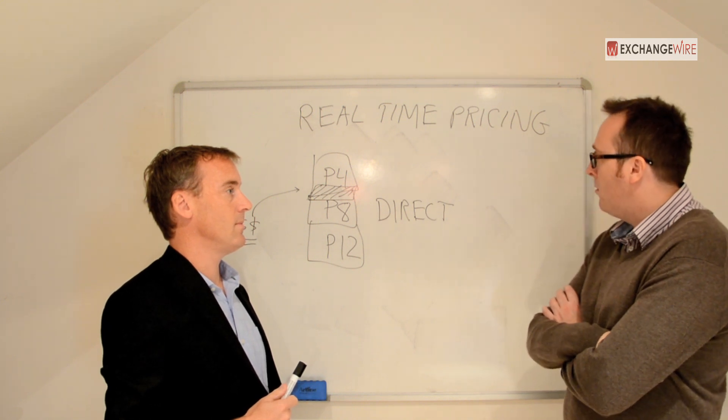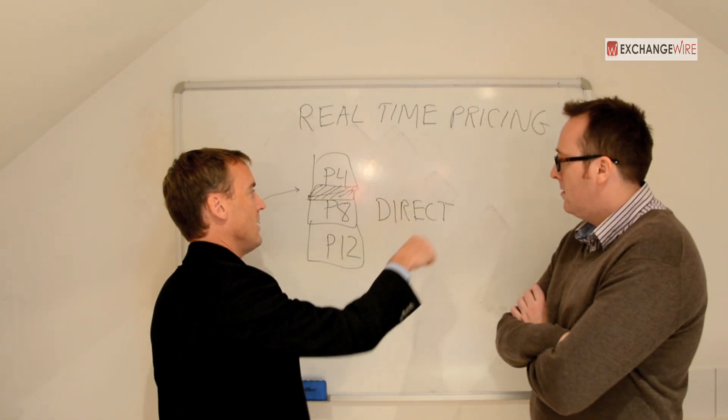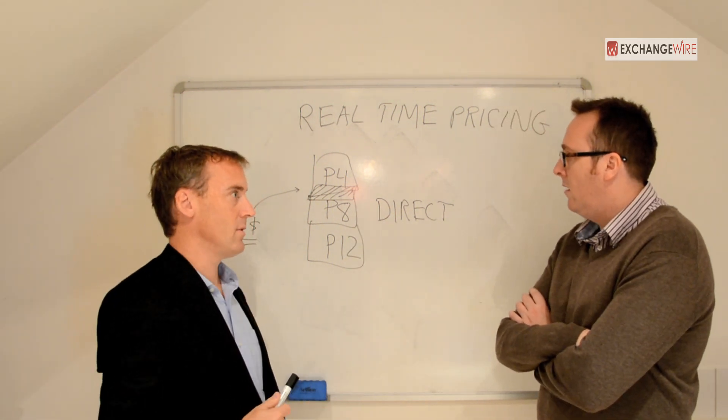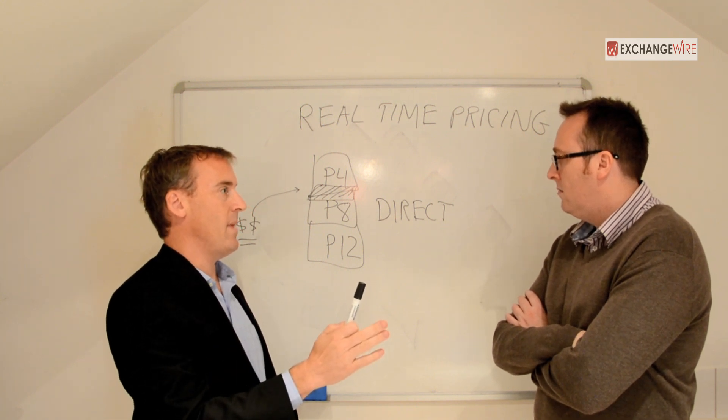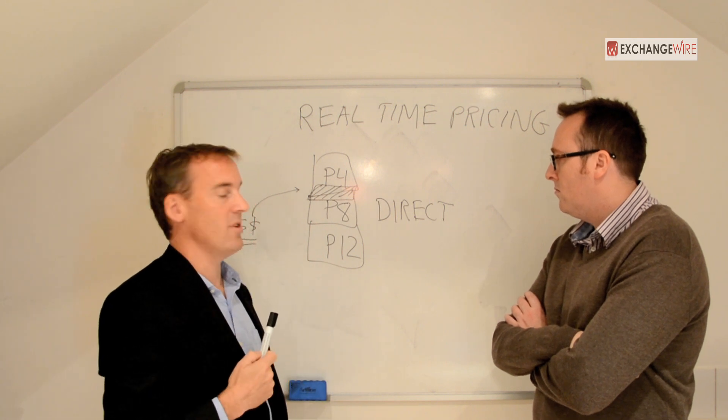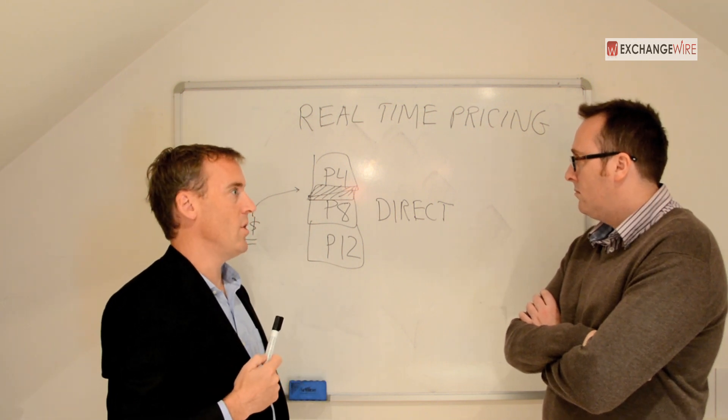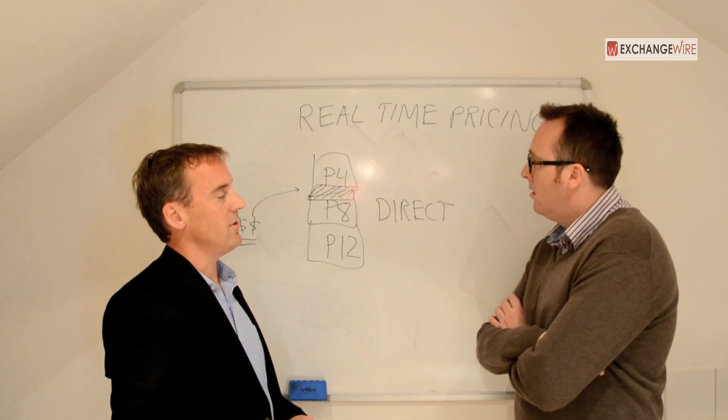So smarter yield optimization, effectively. Smarter yield optimization. Holistic in that you're considering all of your channels. And you're allocating your inventory in a way that makes you the most money while still achieving the best performance and value for both buyers. Your direct buyers and your automated deals. Excellent.